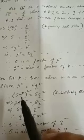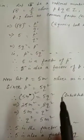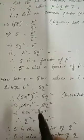Substituting the value of p, we write (5m)² = 5q², which gives 25m² = 5q². Cancelling, we get 5m² = q², therefore q² = 5m². Again, 5 is a factor of q², therefore 5 is also a factor of q. Let this be equation 3.